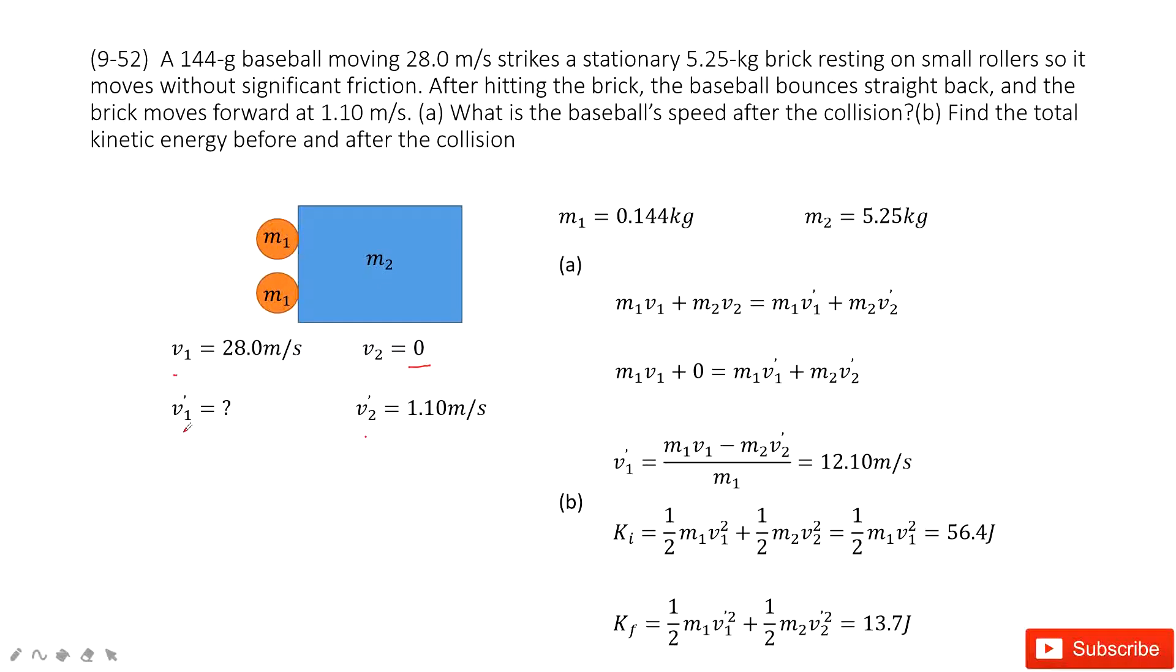Ask you the velocity for the baseball. Can you do that? Sure, because you can see we list all the known quantities there. For this part, the baseball hit the brick, the total momentum is conserved. Agree? So initial momentum equals the final momentum, and we input the known quantities, we can very easily get v1 prime is 12.10 meters per second.